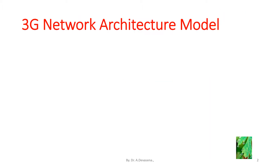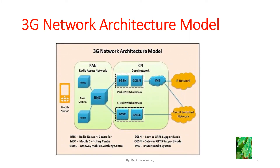The 3G network architecture model is shown below. In this model, we have a mobile station, radio access network, and core network. In the radio access network, we have nodes considered to be the user equipment, and a RNC — that is radio network controller — which is connected to the core network in two domains: a circuit switch domain and a packet switch domain.